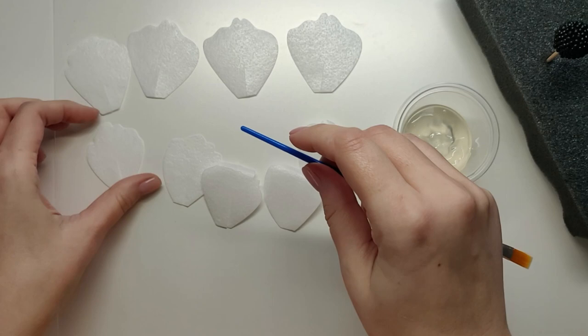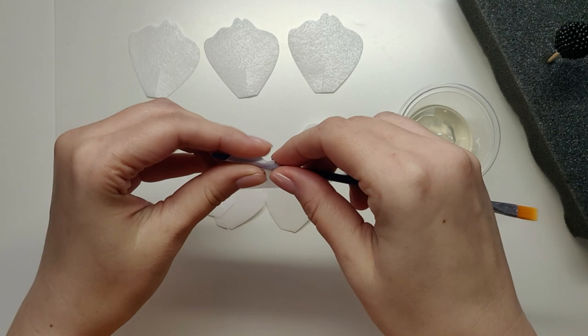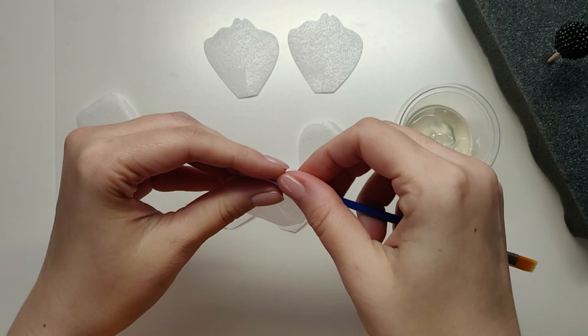For my larger petals I'm going to use the same technique but curl it on both sides, make it more like a rose petal or something like this to make the shape interesting.